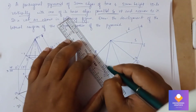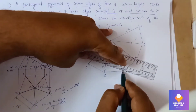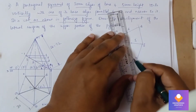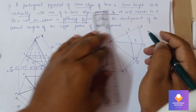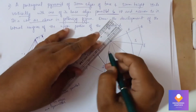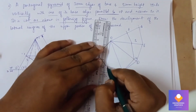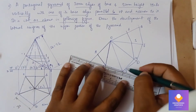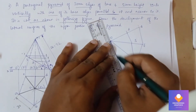Connect all these points with straight lines using the scale — join all of them. Now we can darken the retained upper portion. You can see that particular portion being darkened.